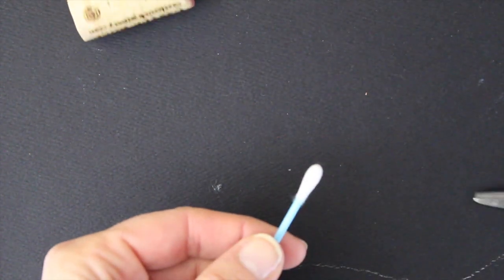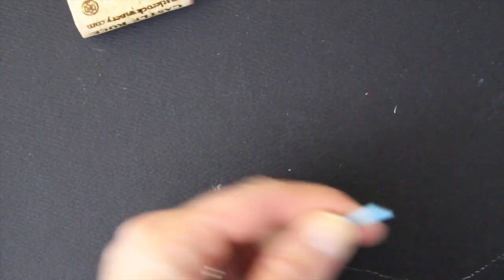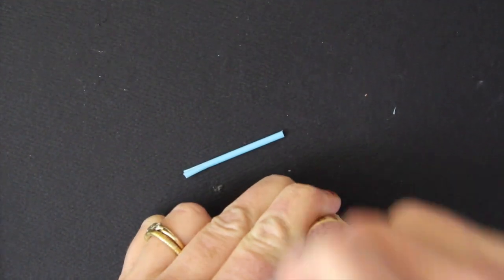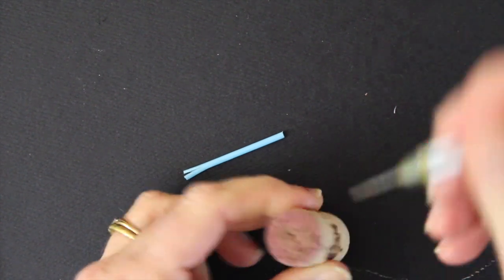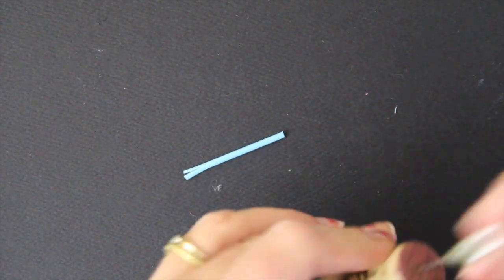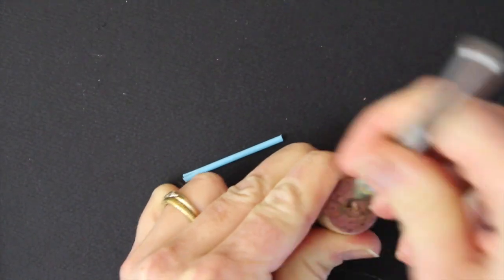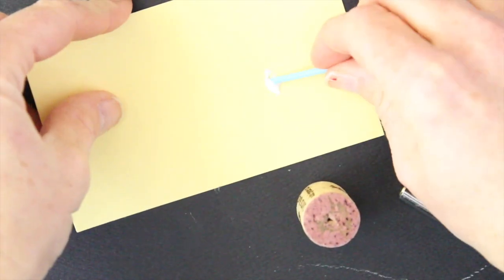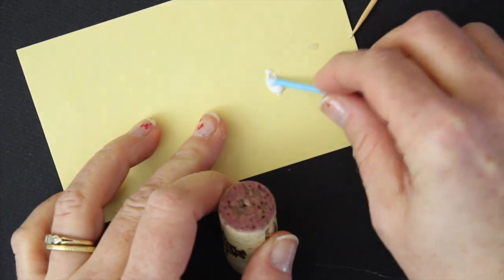I decided to cut the end off the swab, grabbed an old wine cork, and made the hole a little bigger. I used an awl for that, but you could probably use a knitting needle. Once you've made the hole big enough for the cotton swab stem to fit in, just use a little bit of white glue.